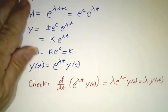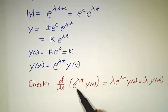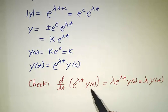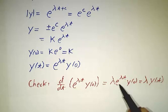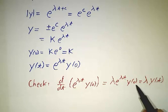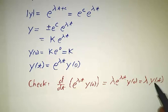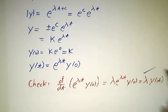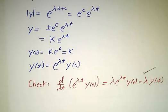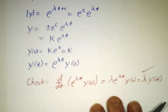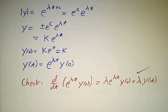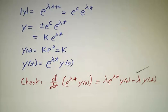Now, we can check, does it work? Well, let's see. What's the derivative of e^(lambda t) y(0)? It's lambda e^(lambda t), that's the derivative of e^(lambda t), times y(0). So that's lambda times y(0). It works. Furthermore, there's one and only one solution for a given initial condition. So this is the solution.